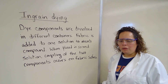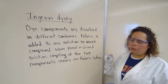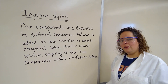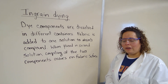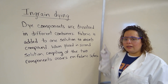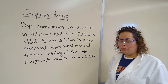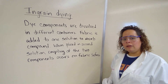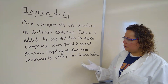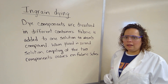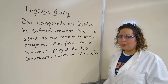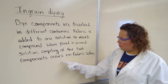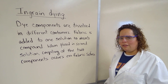We are now moving on to the ingrain dyeing portion of our experiment. The difference between direct dyeing and ingrain dyeing is how the reaction occurs on the fabric. In ingrain dyeing, our dye components are made in two separate containers. We dunk the fabric strip into one solution, pat it dry, then add it to the second solution, and the fabric will turn a particular color. The advantage is that the coupling of the components actually occurs on the fabric strip itself.